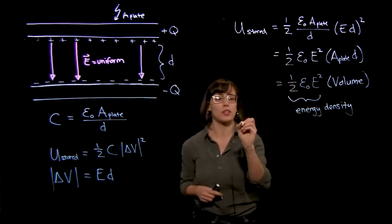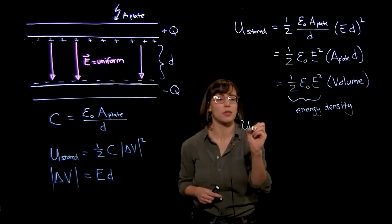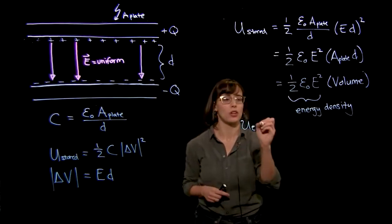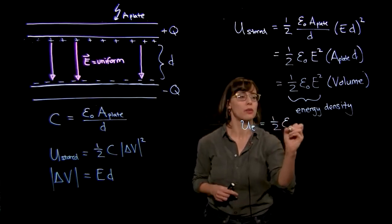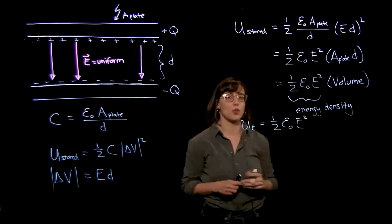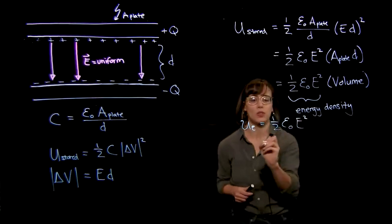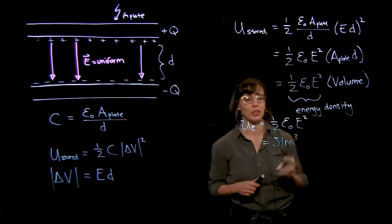This is important enough that we give it its own symbol, so this is a lower case u now. The energy density, we say then, is equal to one-half epsilon zero times e squared. And this has units of joules per meter cubed.